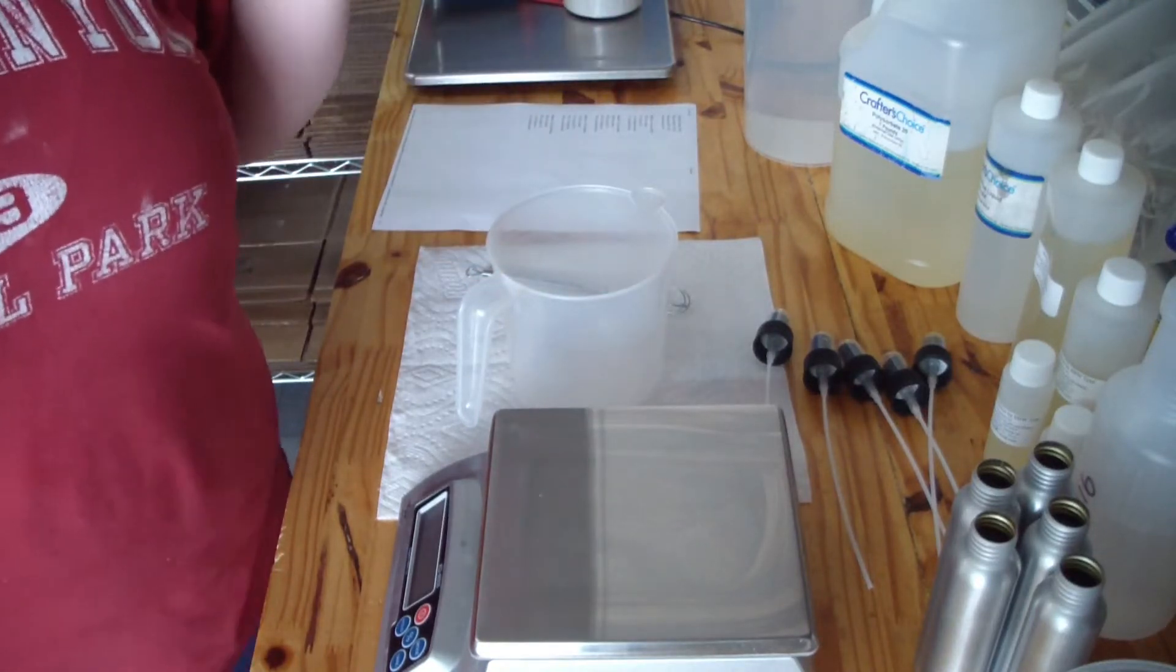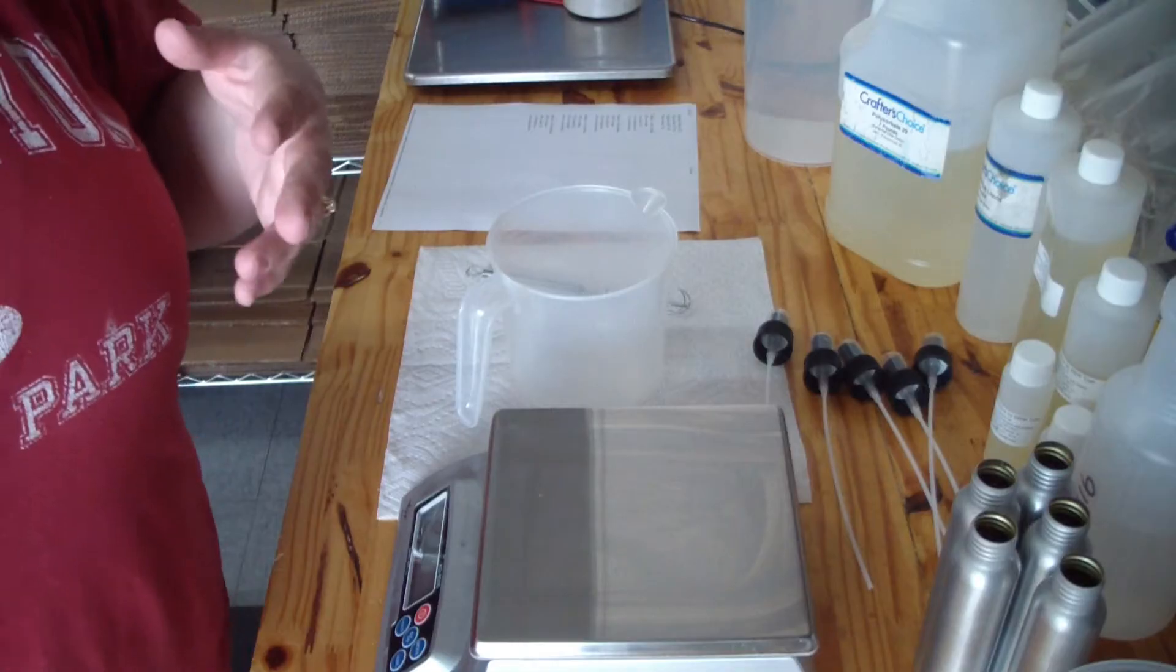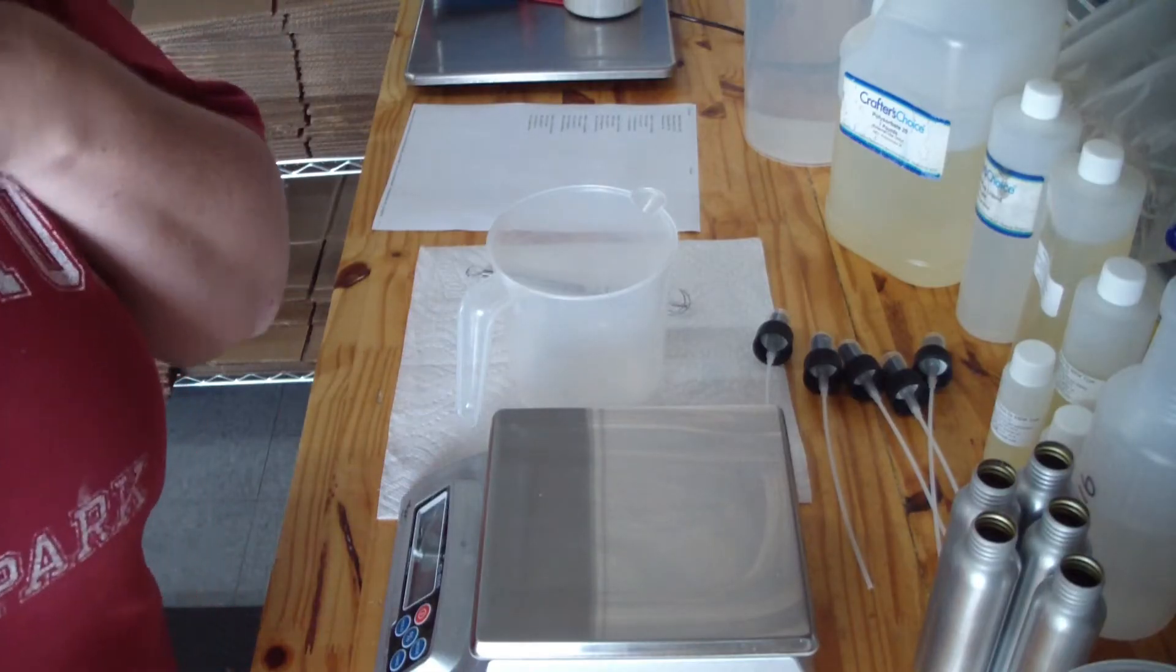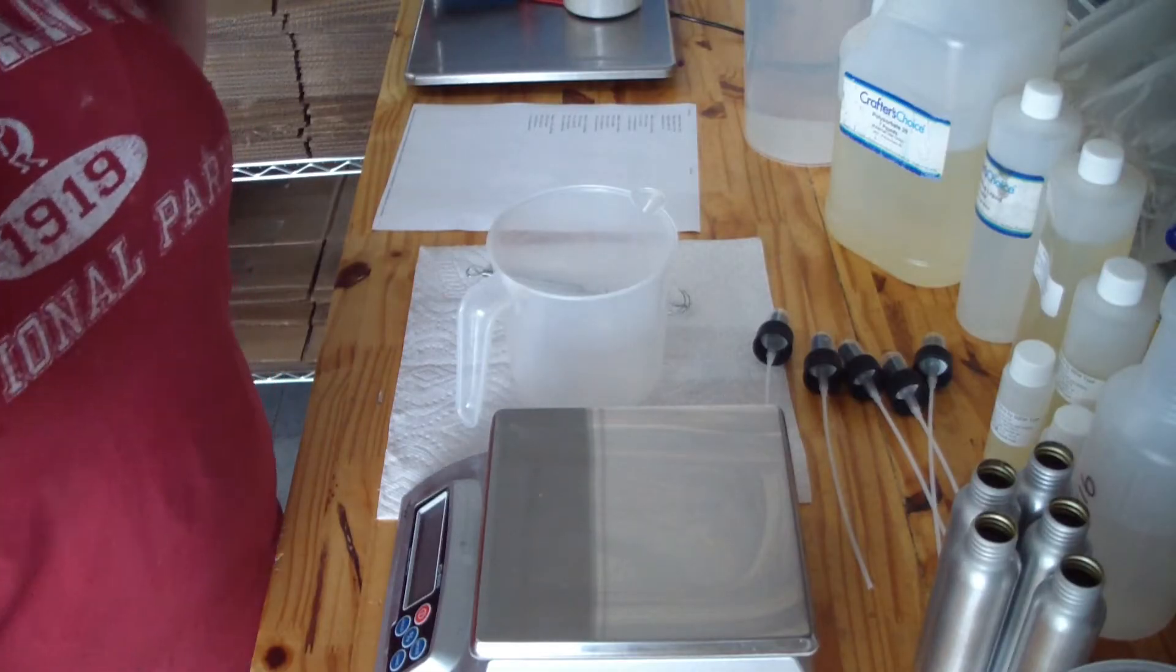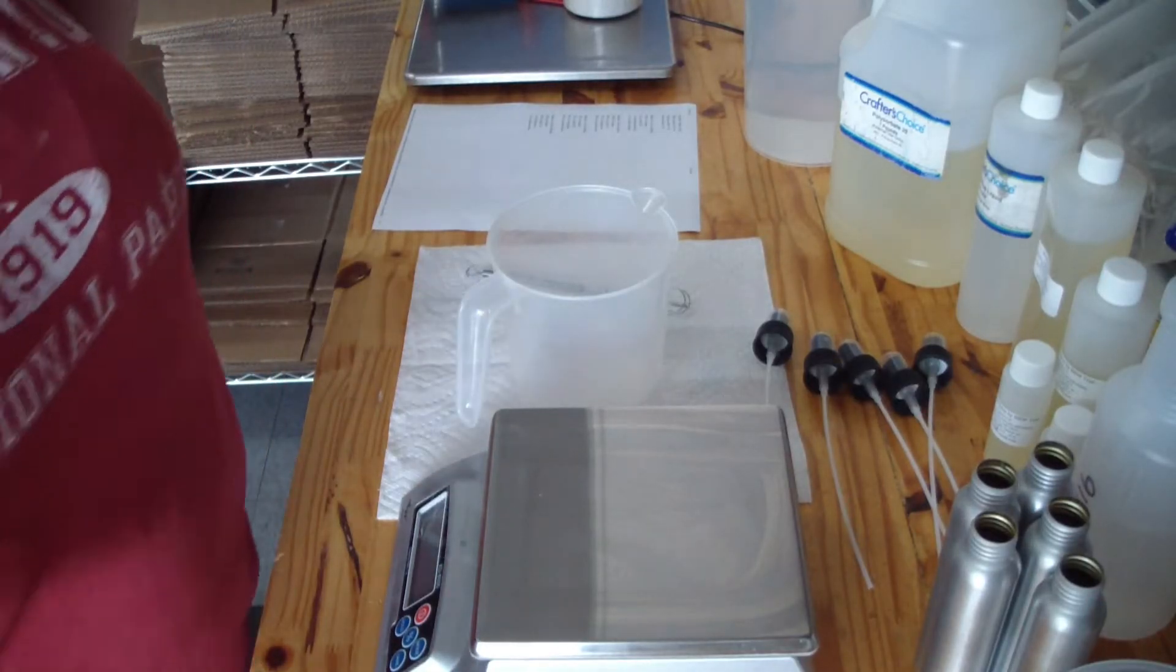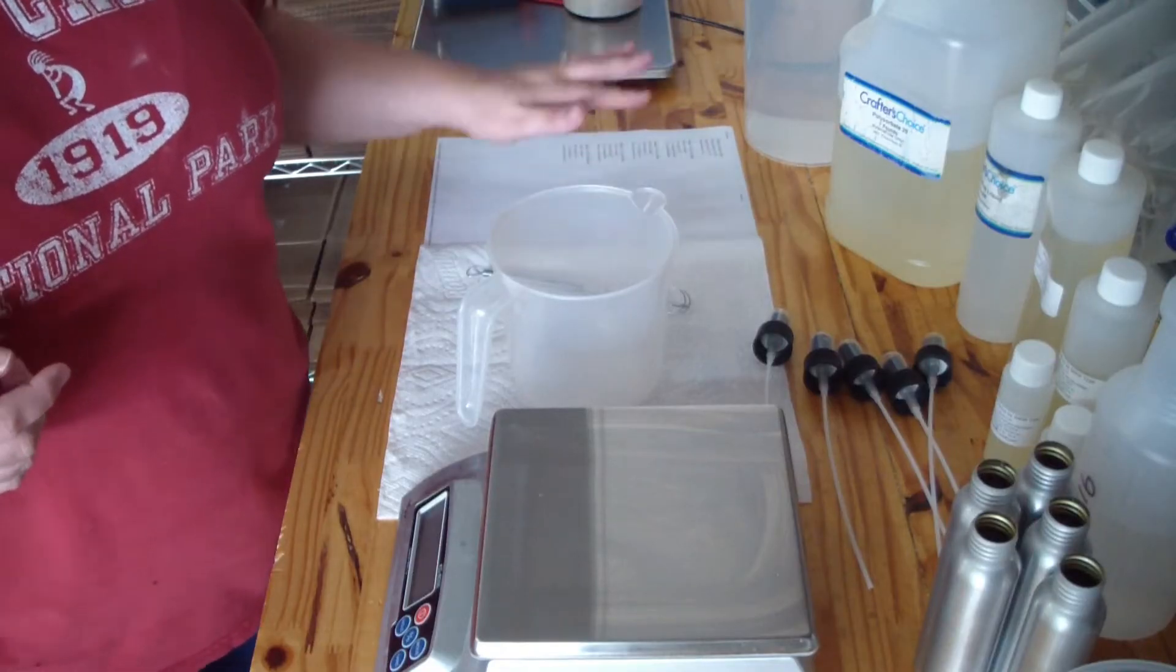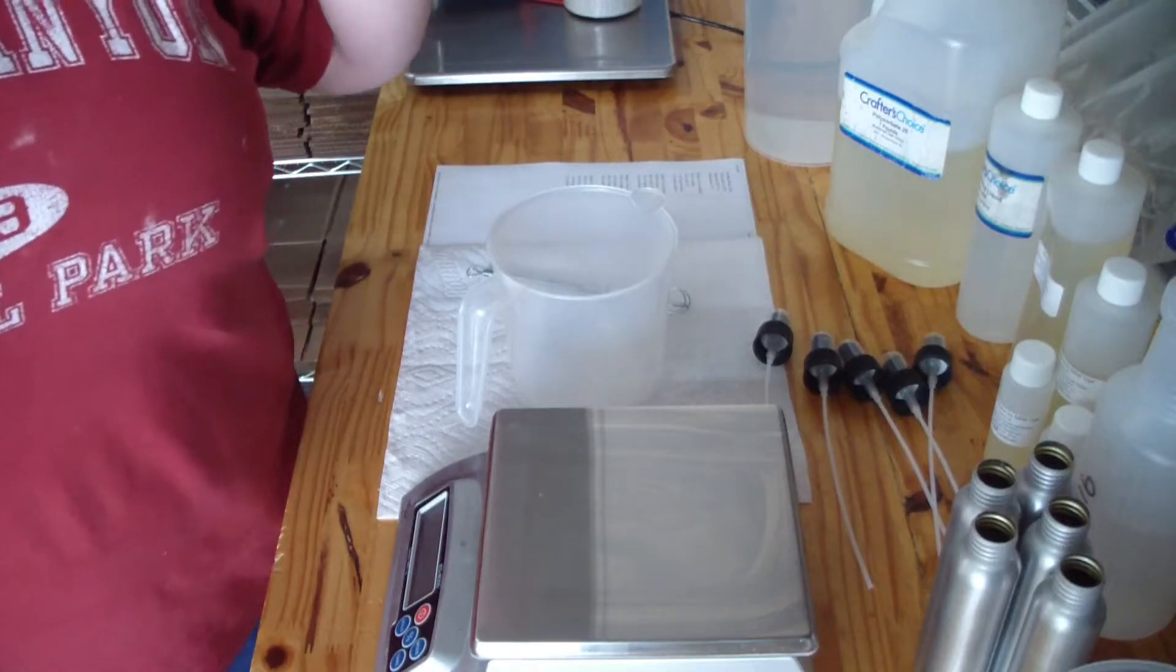When we make a body spray I use rubbing alcohol for the majority of it along with water, but the alcohol allows the scent to stick to your skin for a long period of time. I'll do that as a recipe as well here later, but for the moment I wanted to do the room and linen spray.